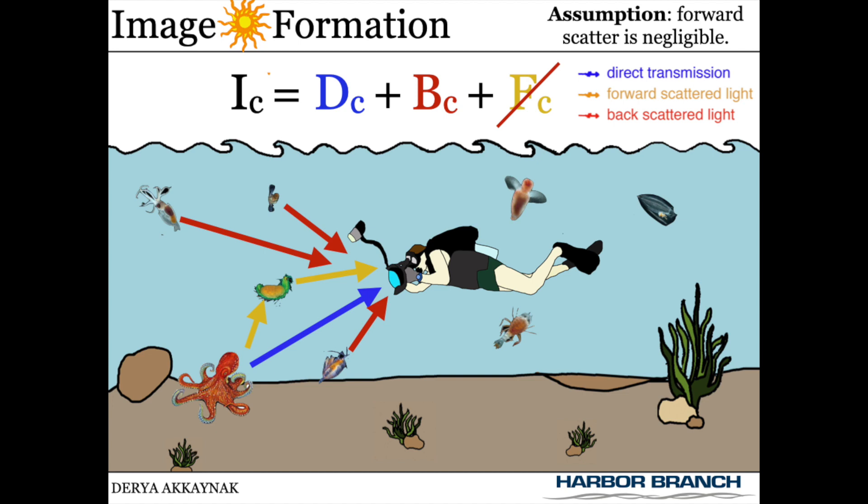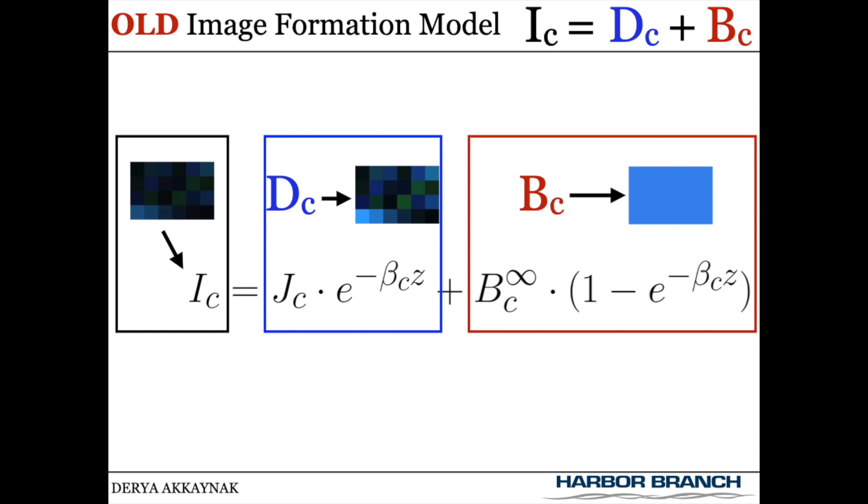Why does the revised image formation model make such a difference? Remember that an underwater image is the sum of the scene with attenuated colors, the direct signal, and the backscattered signal, which is fog due to scattering from particles. Here's the old image formation model and how the direct and backscattered signals look for a Macbeth color chart. What makes it old is not its form, but that the coefficient in both the direct signal and the backscattered signal is the same.